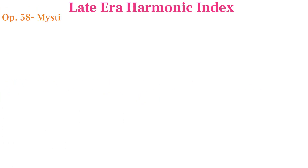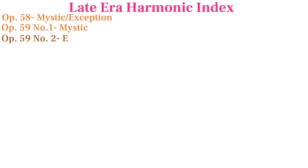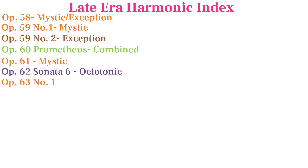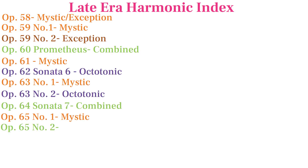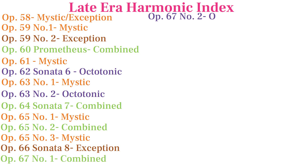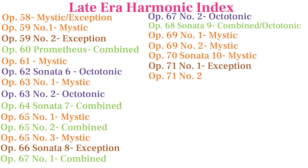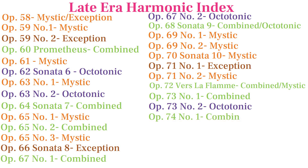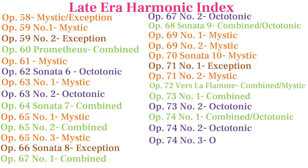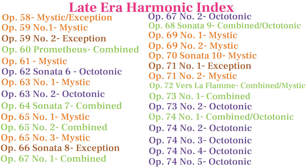Now, as promised, without claiming to be absolutely certain, here is a list of the supersets each late-era Scriabin piece is based on. They are labeled as either being based on the mystic chord in orange, octatonic in purple, combined sets — meaning 7.26 or 8.2 that we just discussed — in green, and exceptions in brown, meaning they are based on sets we haven't discussed yet, which is the topic of the next video.